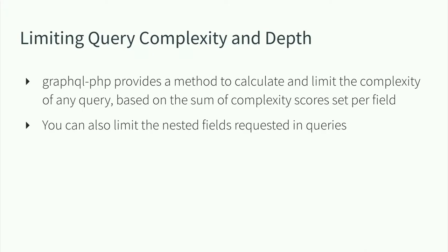If you're exposing a GraphQL server externally, you might be concerned about pathological queries — queries that could be very harmful to your system's performance, whether malicious or just poorly written. The GraphQL-PHP library provides a couple of ways to handle this. You can set a complexity cost per field and set a threshold — when GraphQL is resolving fields from a query, it calculates the sum of complexity, and if it exceeds that threshold, the query is stopped. You can also set a depth limit to restrict the number of nested fields requested in queries. These are mitigation measures — not perfect, but useful tools.